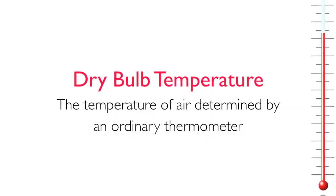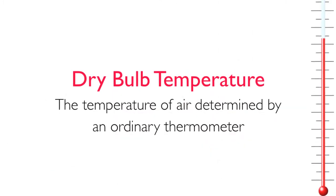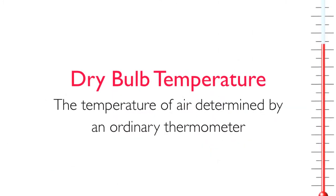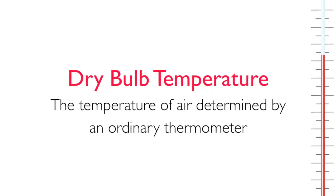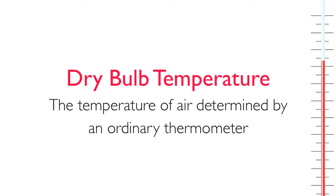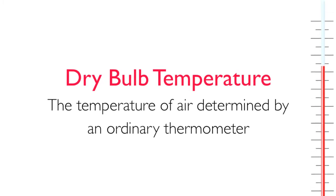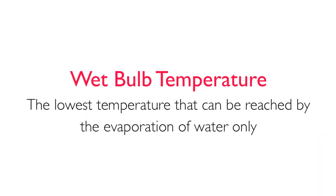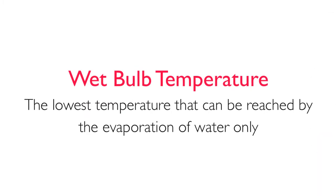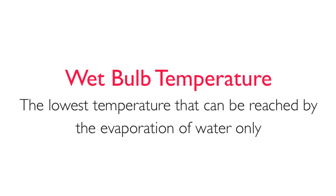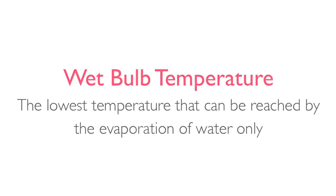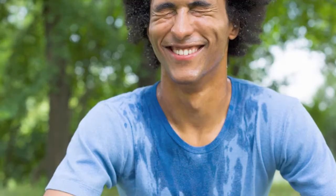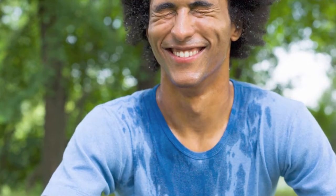Dry bulb temperature is the temperature of air determined with an ordinary thermometer. Here it's shown in degrees Fahrenheit. Wet bulb temperature is the lowest temperature that can be reached by the evaporation of water only. It's the temperature you feel when your skin is wet and it's exposed to moving air.